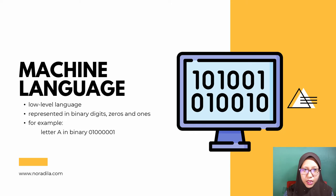Machine language, or machine code, is a low-level language. In machine language, the computer directly understands it as it is represented in binary digits — a series of zeros and ones.